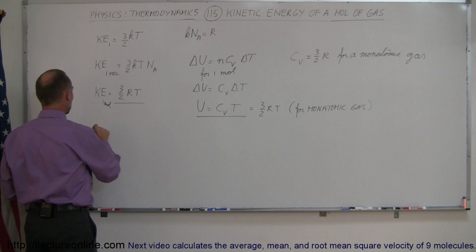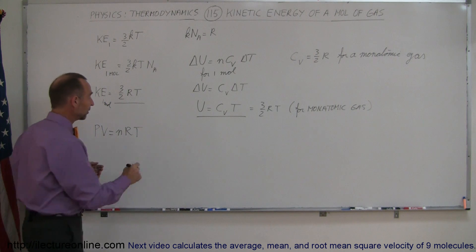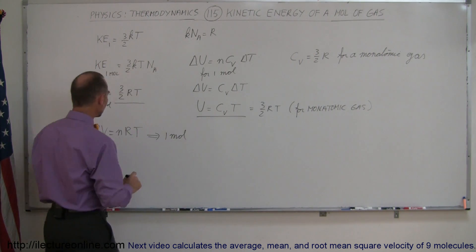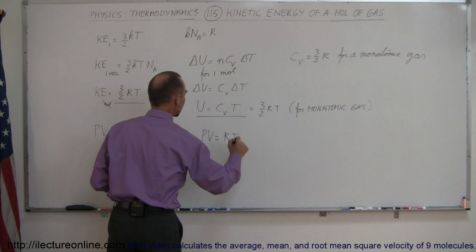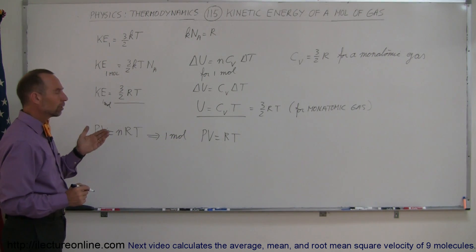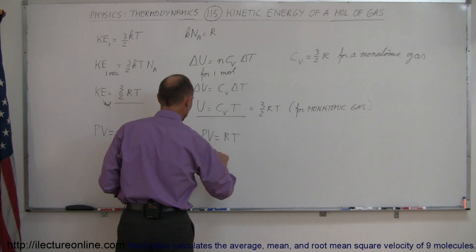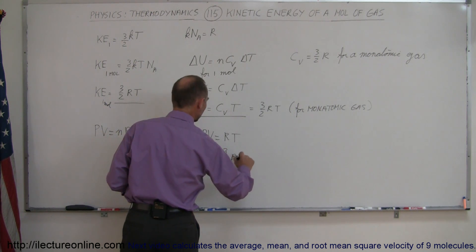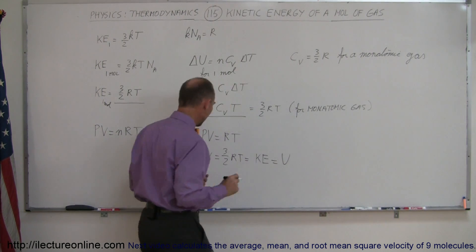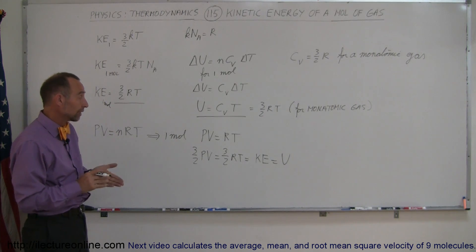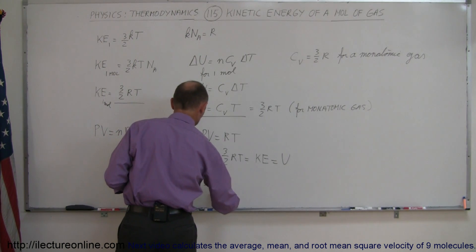Now if we take a look at the ideal gas equation PV equals NRT, for one mole N equals 1, so PV equals RT. If we multiply both sides by 3 halves, we get 3 over 2 PV equals 3 over 2 RT, which equals the kinetic energy of the gas, which equals the internal energy of the gas. So the internal energy U equals 3 over 2 PV.